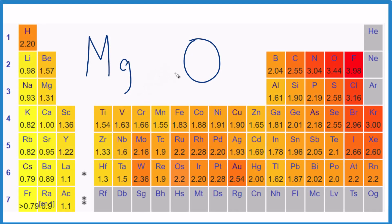So the question is, which has a greater electronegativity, magnesium or oxygen? We have the periodic table here divided up into electronegativity values. They're listed below each element.